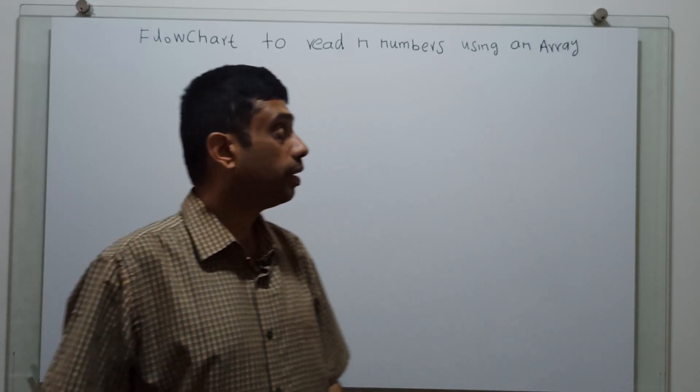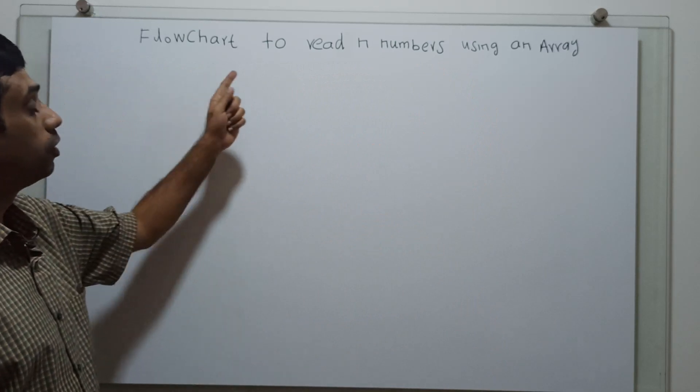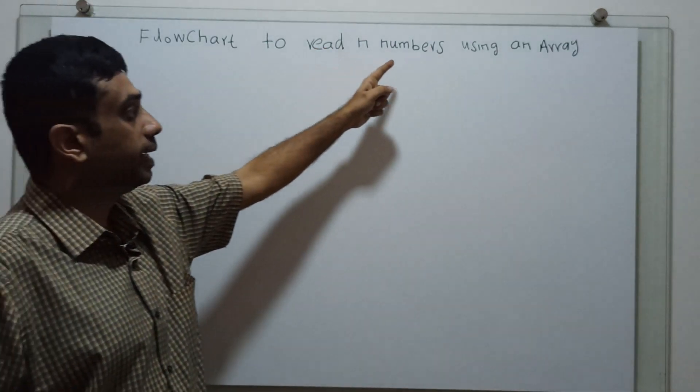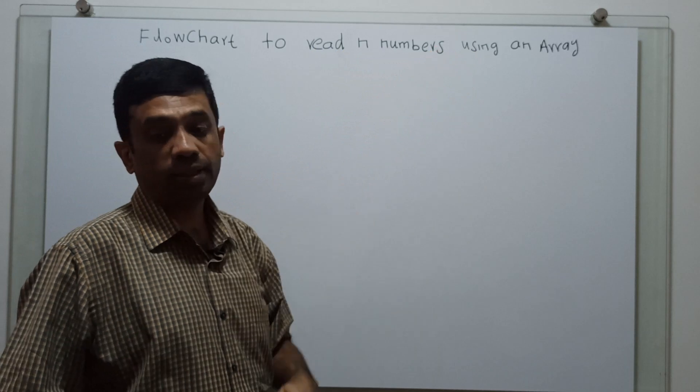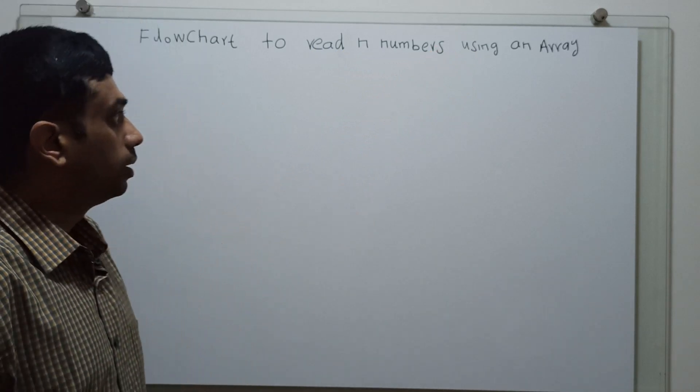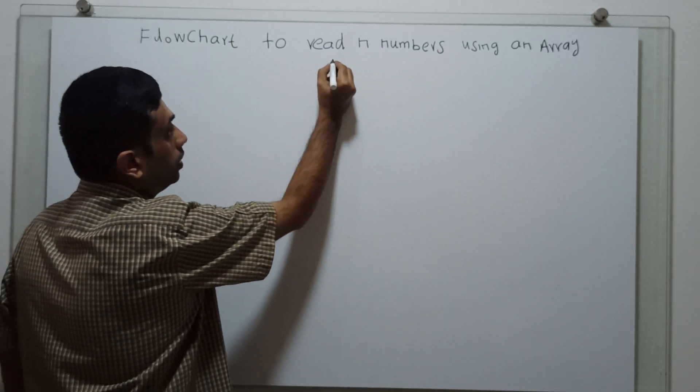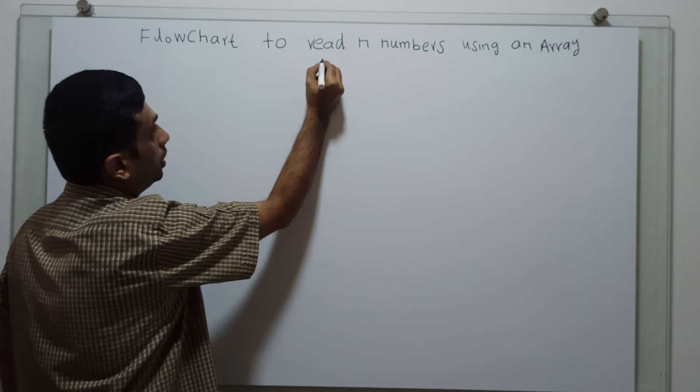Hello friends, we are going to draw a flowchart to read n numbers using an array. This is a logical start of the flowchart.